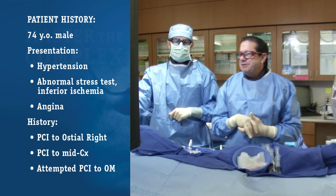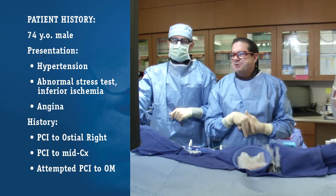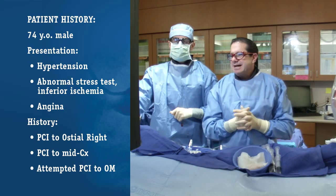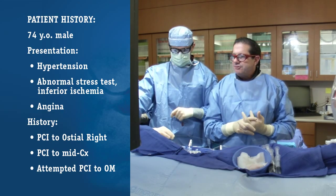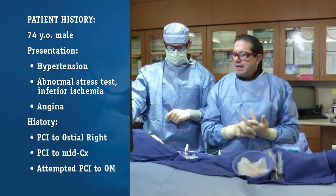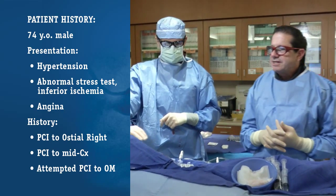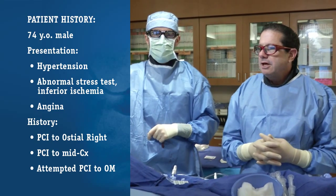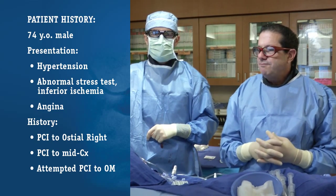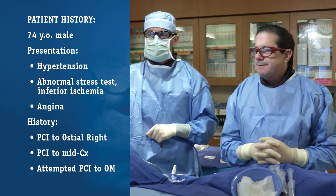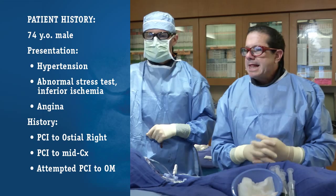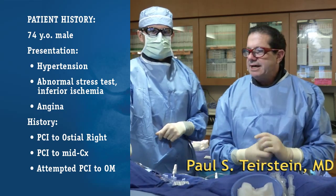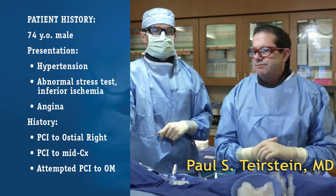This patient is 74 years old, he's got hypertension, family history, he had an abnormal stress test, has angina, the stress test showed inferior ischemia, and he's had a history of PCI to his osteo right and his mid-circumflex.